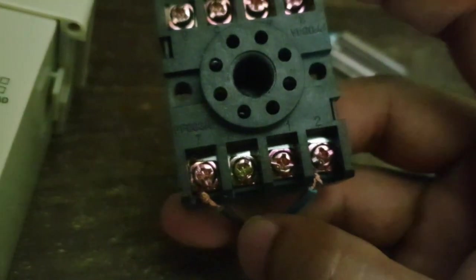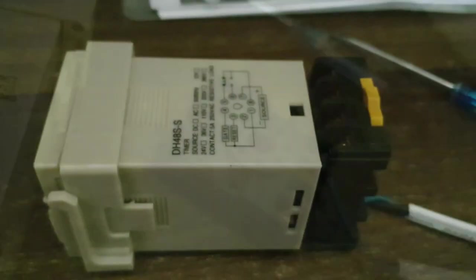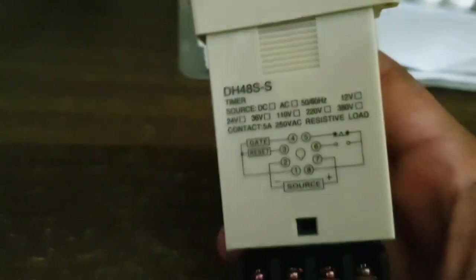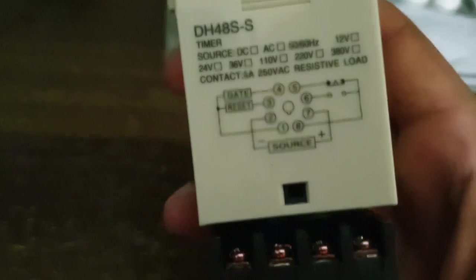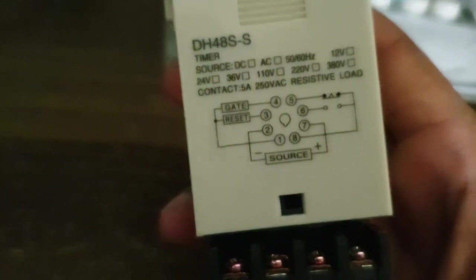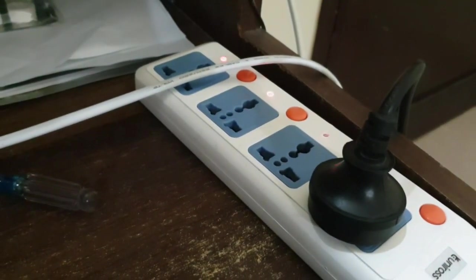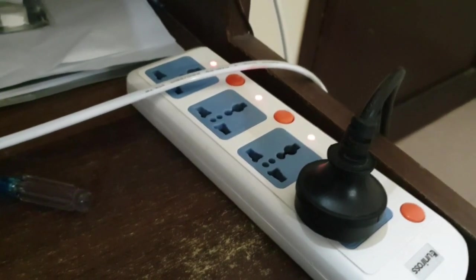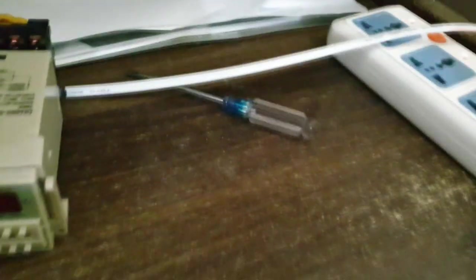The power is now connected to pin number two and pin number seven, which is the source. Here's the relay and my 220 volt supply. As you can see, the LEDs are blinking, which means it's not DC.